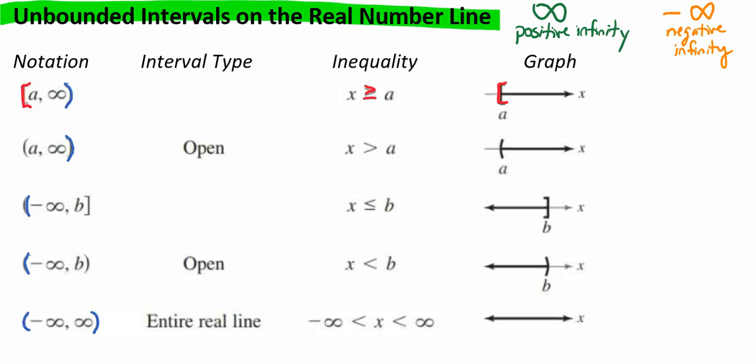If we look at our next one, we have parentheses, a comma, infinity, parentheses. Because the left side and the right side both have parentheses, that's going to be an open interval. So we're going to say that x is only greater than A, and we use a parentheses when we graph that.